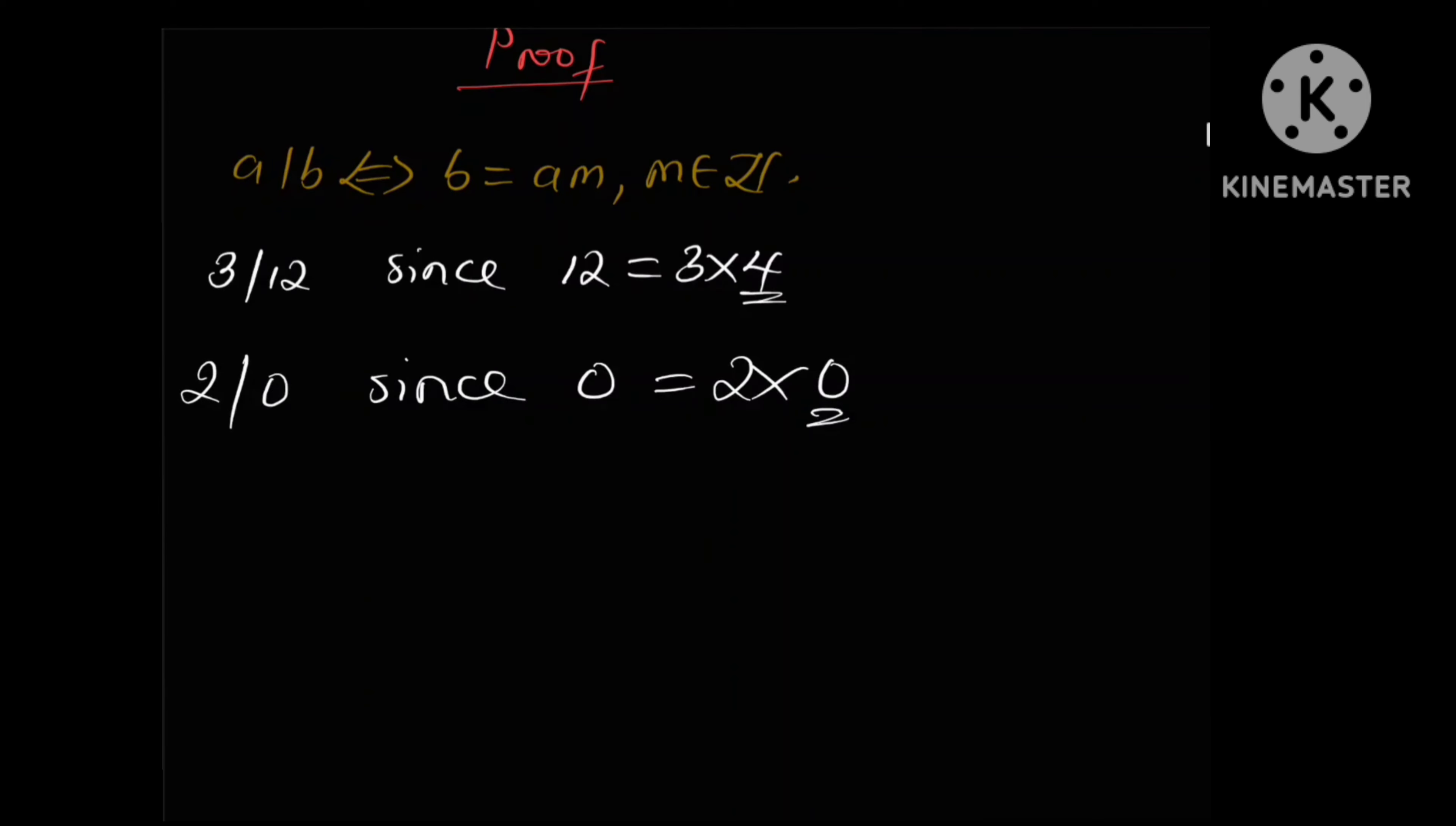So we have to start by assuming that A divides B, and if this is true, then B must be equal to A times M, where M is an integer. And if B divides C, then C should be equal to B times N, where N is also an integer.